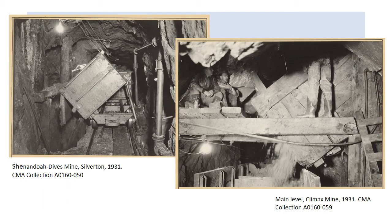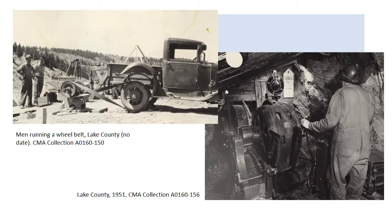Here are some examples of mining conditions in general. This is the Shenandoah Dives Mine in Silverton in 1931 with the mine car, the ore car, and on the right hand side a chute loading ore cars. There are two miners crouched on one side and a third miner standing at the chute — you can see basically his legs and boots. I like the men running a wheel belt in Lake County — they've got their old pickup truck up on blocks and are using it to operate equipment on their mine site, probably not too far from Leadville. On the right is a miner operating a hoist; some people suggested this was probably a horizontal hoist used to pull mine cars along the tunnel, with a signal card for the hoist operator.